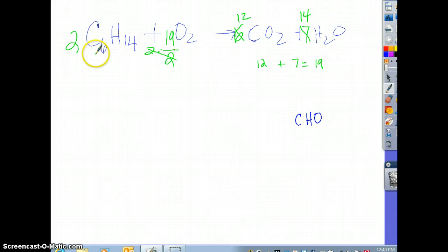Double check. 12. 12. 28. 28. 38. 24. Plus 14. 38. And this is balanced. Great.